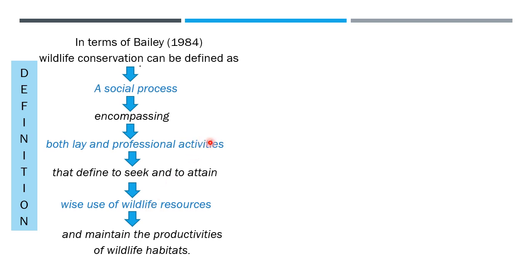Basically, wildlife conservation is a social process including both layman and professional activities aimed at achieving a viable wildlife population maintained in a productive wildlife habitat. We need to conserve animals in their original habitats as far as possible. As for professional activities, I'll take up the case study of rhinoceros to explain what sort of professional activities are necessary to conserve and manage wildlife.